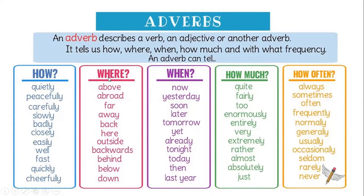When describing 'where,' we use adverbs like above, abroad, far, away, back, here, outside, backwards, behind, below, down. For 'when,' we use now, yesterday, soon, later, tomorrow, yet, already, tonight, today, then, last year. For 'how much': quite, fairly, too, enormously, entirely, very, extremely, rather, almost, absolutely, just. And for 'how often': always, sometimes, often, frequently, normally, generally, usually, occasionally, seldom, rarely, never.